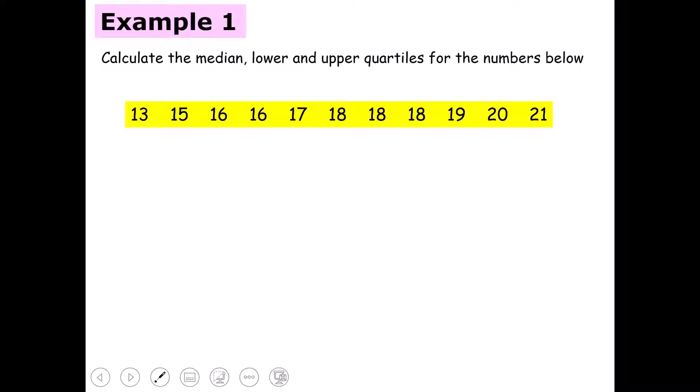Example one: we are being asked to calculate the median, lower and upper quartiles of a number set — the numbers listed here. We have a list of numbers, and we can see that they are already in order, so we can start calculating the median, lower and upper quartiles.